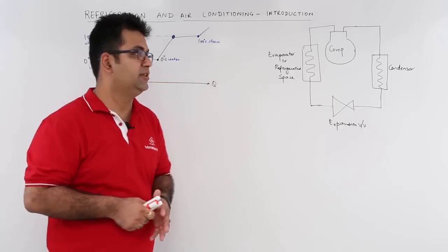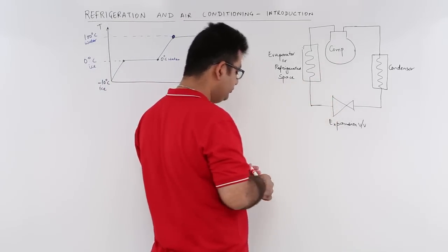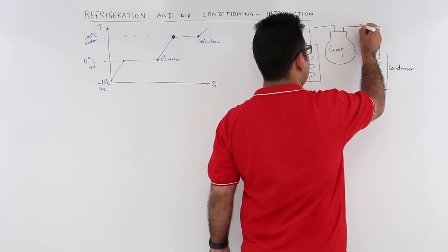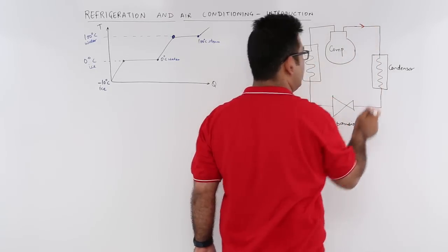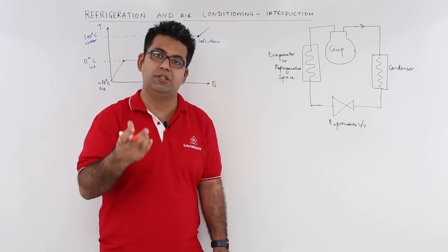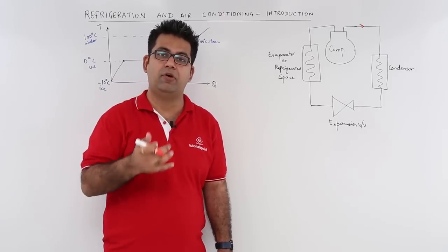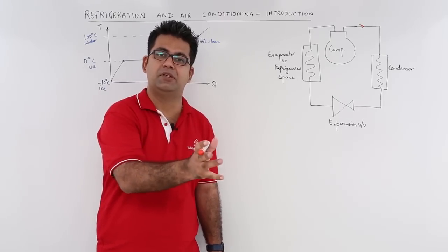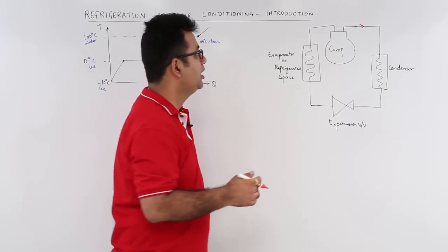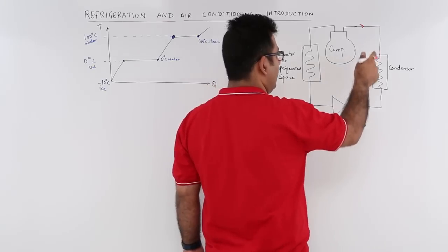The main components: the first component is the compressor. The fluid which is used to extract heat from a given substance is called a refrigerant. The refrigerant is coming out of the compressor and goes into the condenser.